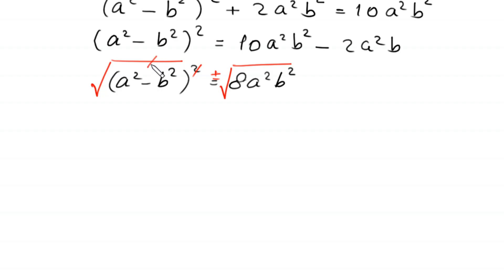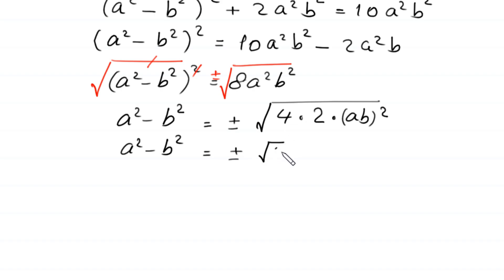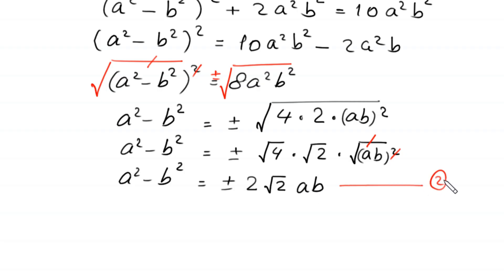The square cancels with the square root on the left, leaving a squared minus b squared equal to plus or minus the square root of 8 a squared b squared. Since 8 equals 4 times 2 and a squared b squared equals (ab) whole squared, this becomes plus or minus root 4 times root 2 times ab, giving a squared minus b squared equals plus or minus 2 root 2 times ab. We call this Equation 2.